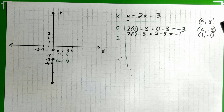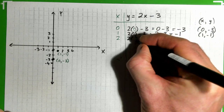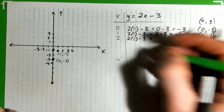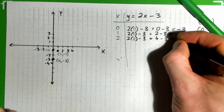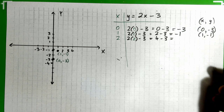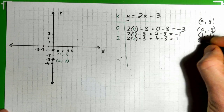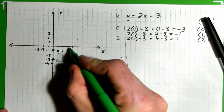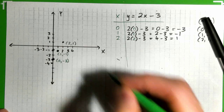Then x is 2. y is 2 times 2 minus 3, which gives us 4 minus 3, which is 1. So that point is (2, 1): x is 2, y is 1.